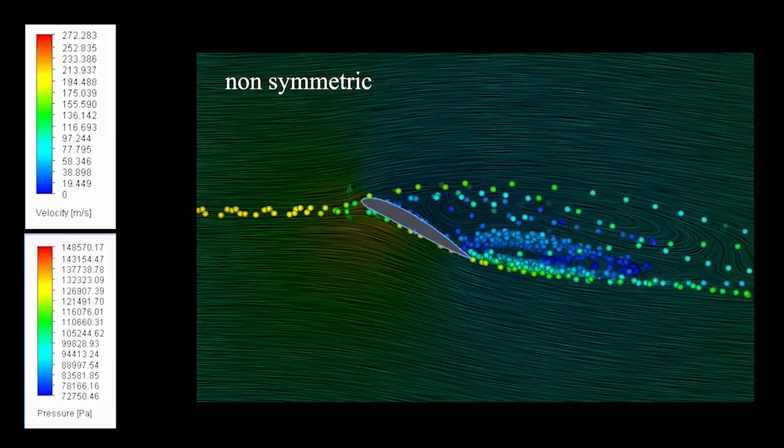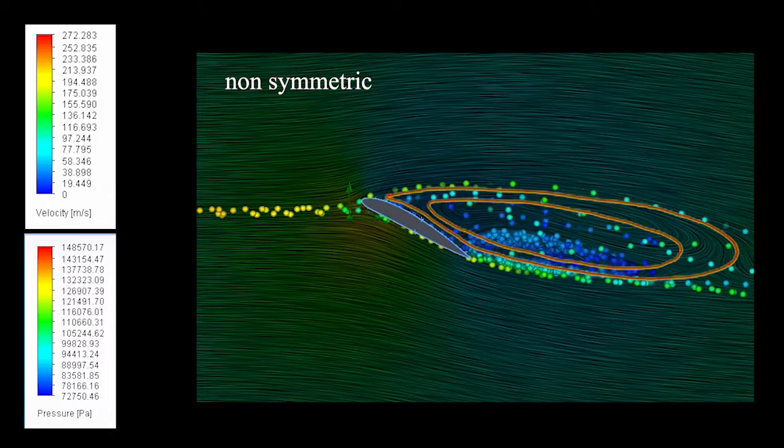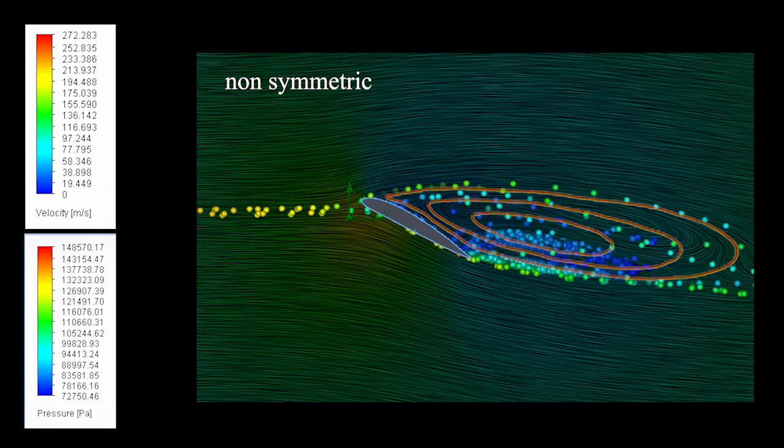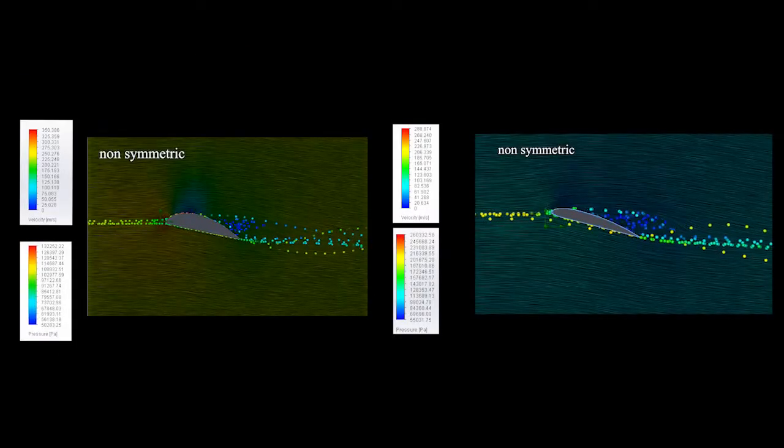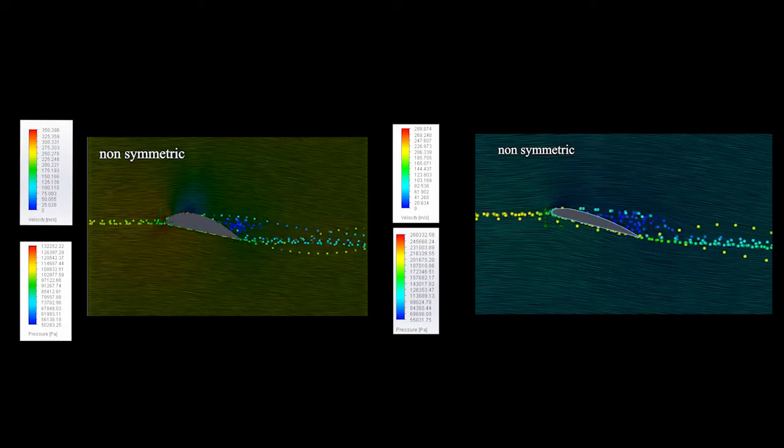In other words, a larger angle of attack causes a wider wake region and more intensive flow separation. The asymmetry of airfoils is another effective parameter in creating pressure difference. Airfoils with greater curvature produce more lift.